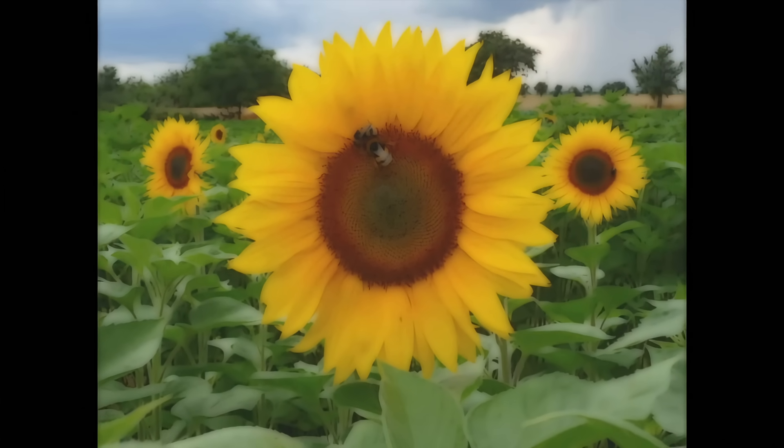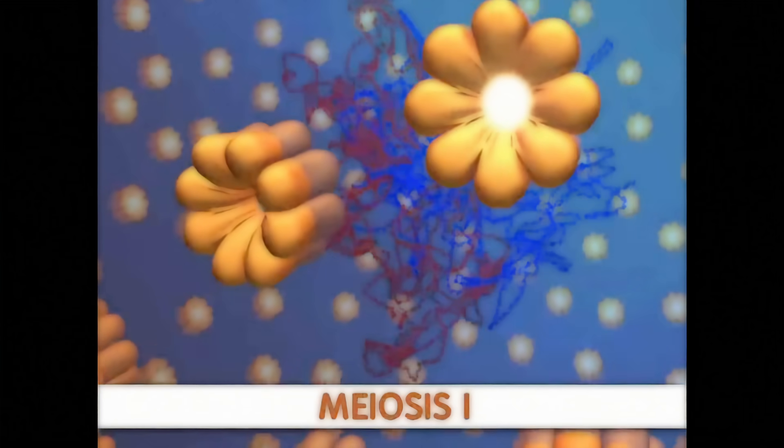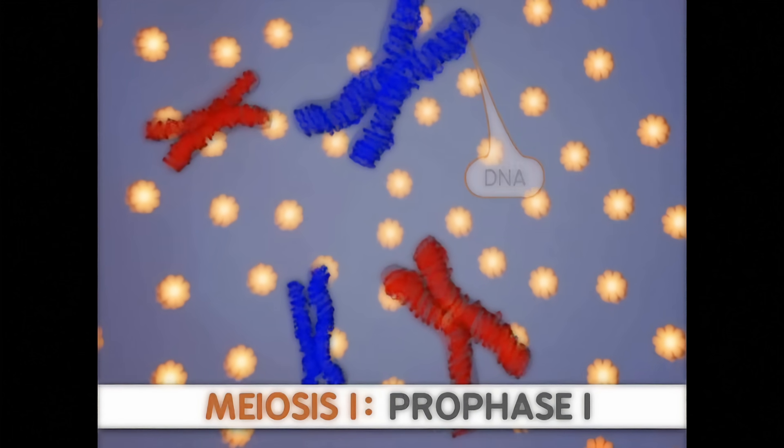Let's look more closely at each of the division events. Meiosis begins with prophase I. In this stage, the DNA condenses to form chromosomes.